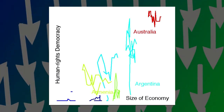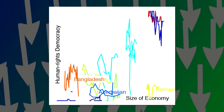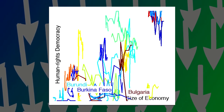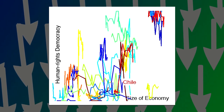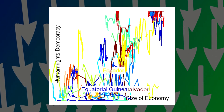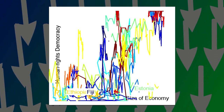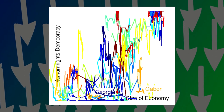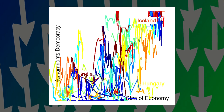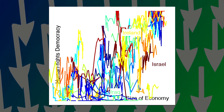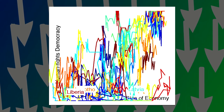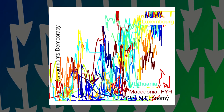Let's take democracy and economic growth as an example. If I take all of the countries in the world, I can watch how they've changed over the last 30 years. As we add more and more countries, it all becomes a bit messy — some of them are becoming less democratic, some more so. But is there really a pattern?